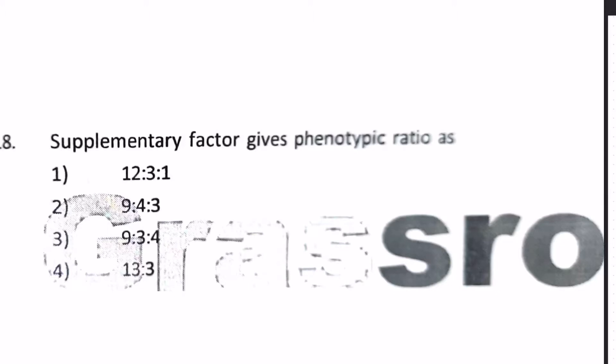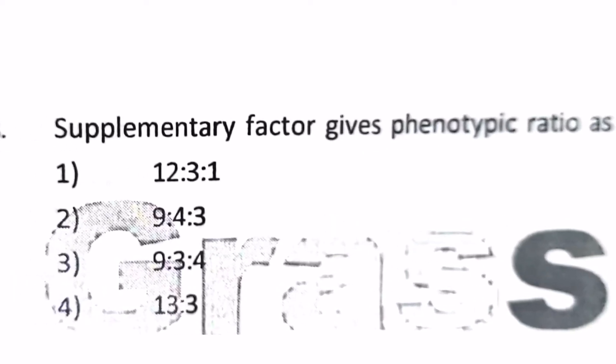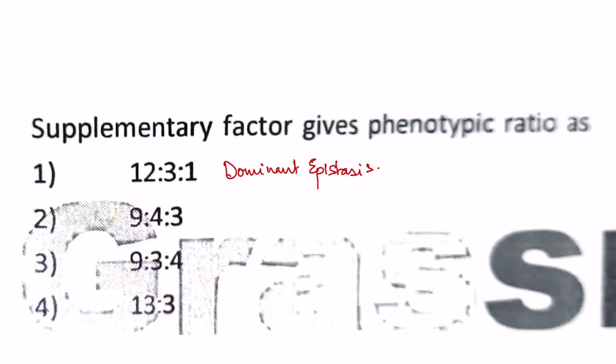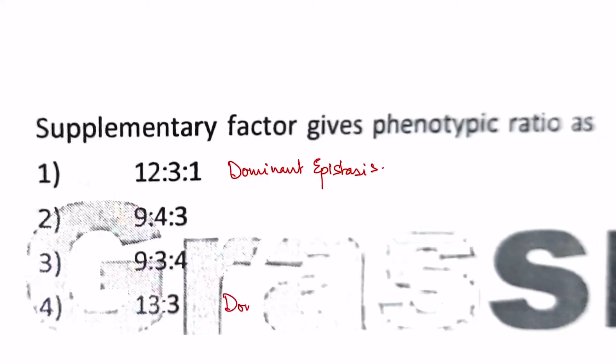Let's check what all of them are. First, 12:3:1 shows it's a dominant epistasis. 13:3 shows it's both dominant and recessive interaction.